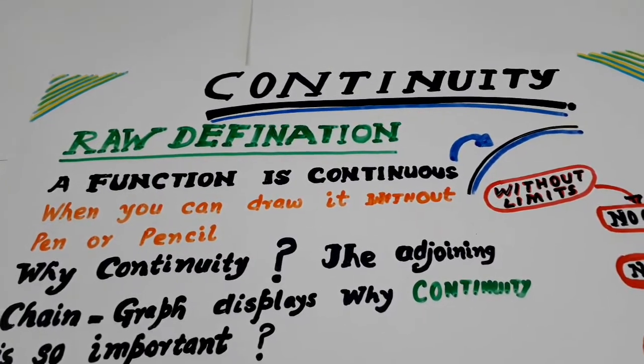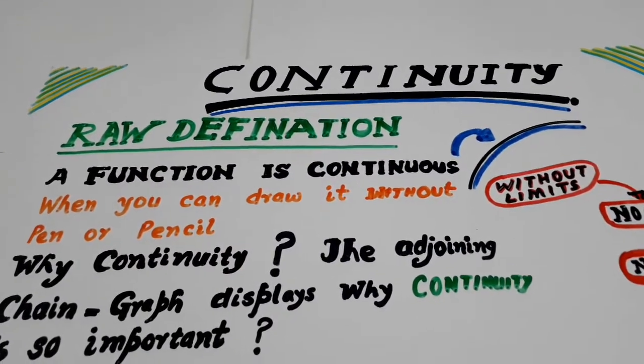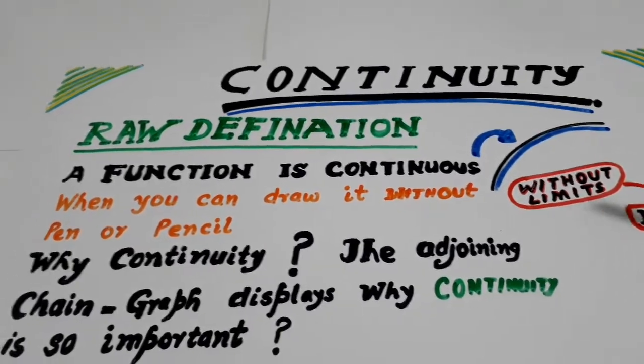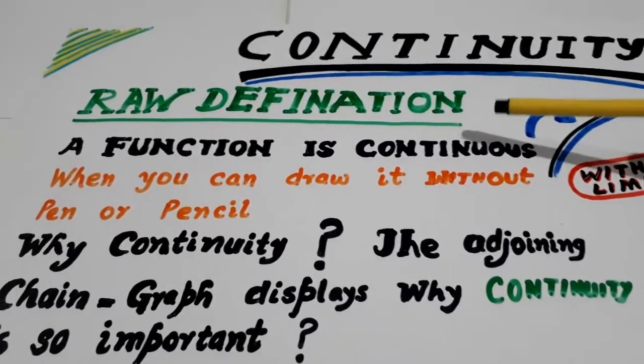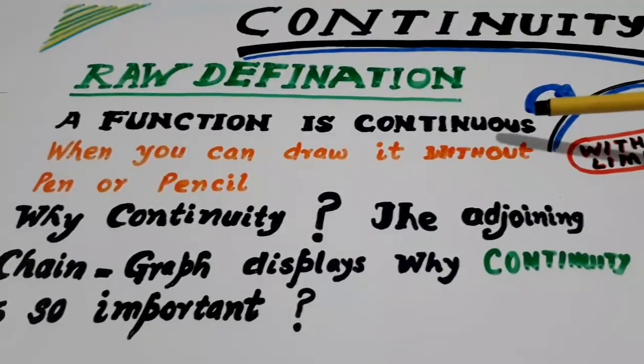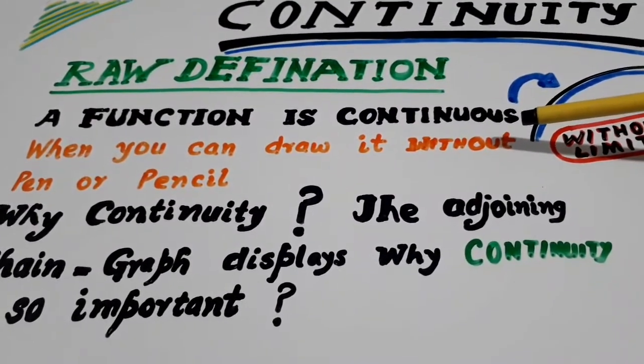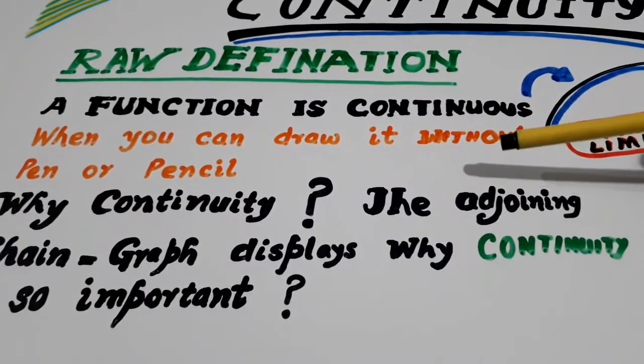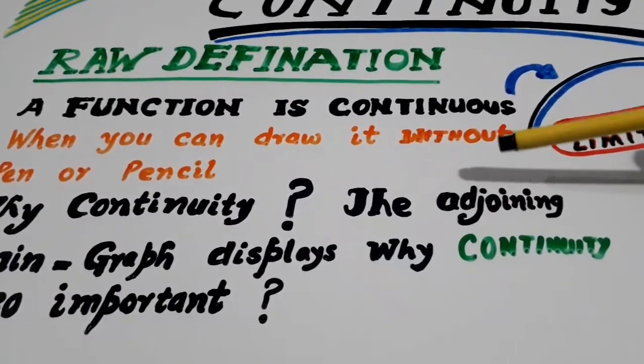Hello friends, I have come up with my notes on continuity. Look here, the definition. Raw definition is a function is continuous when you can draw it without pen or pencil. Look here,